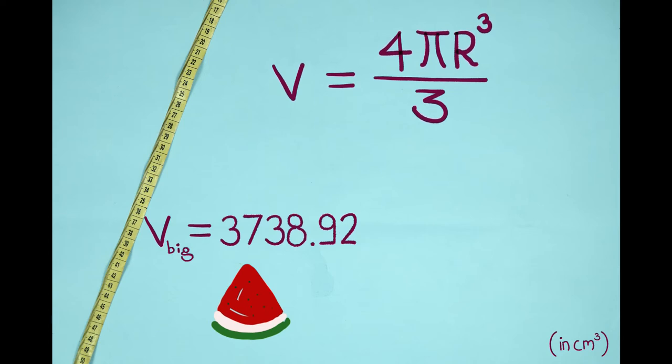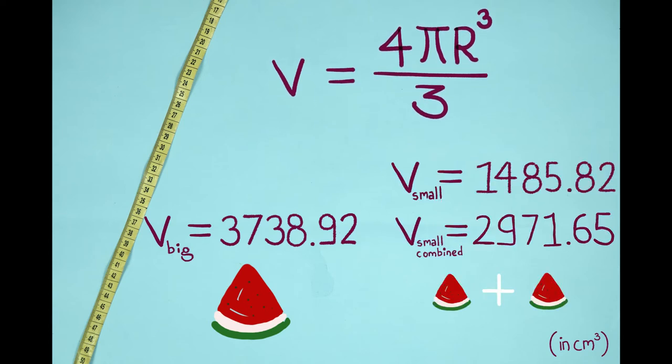Surprisingly, the bigger one has way more pulp than the two small ones combined. How is it even possible?